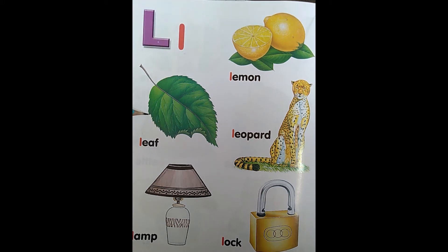Here is a green thing. What is this? This is L, leaf. L, leaf. Leaf is of green color.